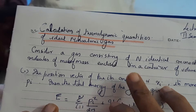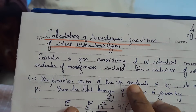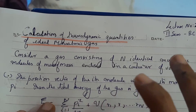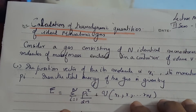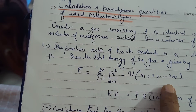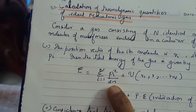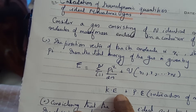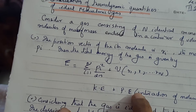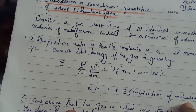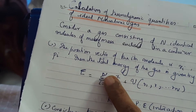Consider a gas consisting of N identical monatomic molecules of mass m enclosed in a container of volume V. We have N identical molecules and the volume is V. Now we are going to write its energy in terms of kinetic energy and potential energy. Kinetic energy is p²/2m and potential energy is a function of the coordinates, describing the interaction between molecules. We have N molecules.